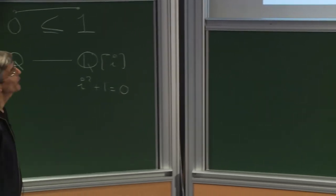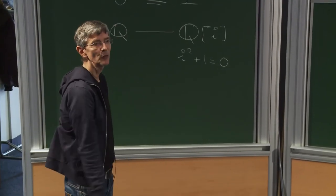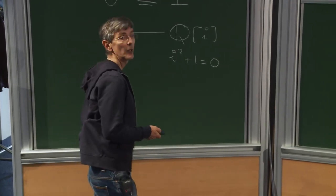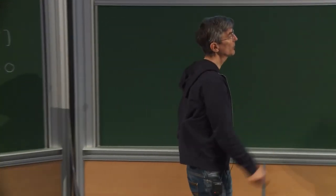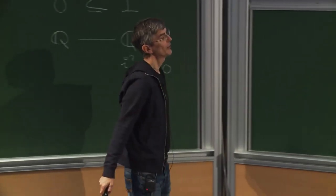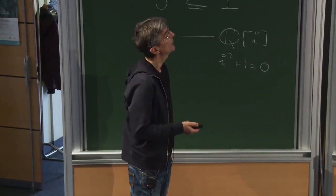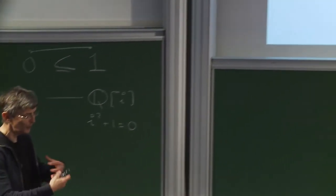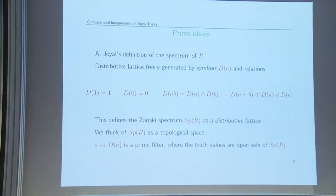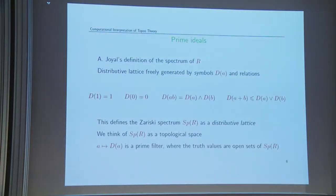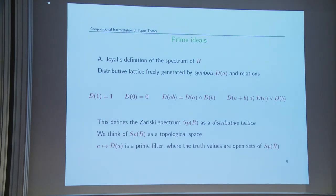Joyal showed that this is not valid, and he built a pre-sheaf model where the object of prime filters is actually empty. This shows that in an arbitrary topos you cannot solve this issue simply by dualizing. But at the same time as Joyal found this counter-example, he had the idea that you can actually find a prime ideal — not in the same topos you start from, but in a suitable sheaf extension of this topos. Furthermore, this construction is completely canonical — not like in classical mathematics.